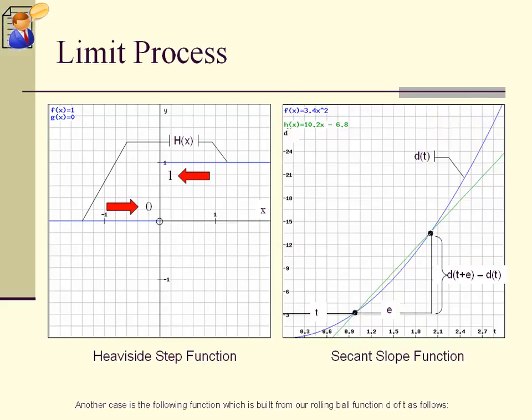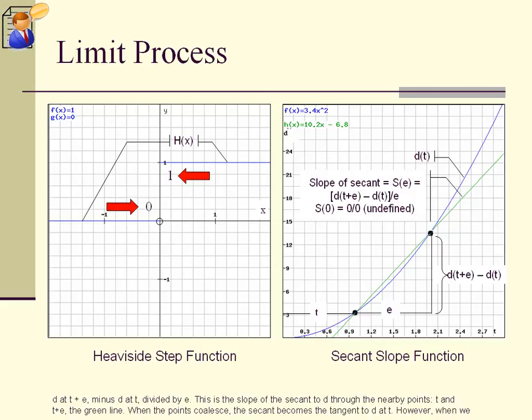Another case is the following function which is built from our rolling ball function d of t as follows: d at t plus e, minus d at t, divided by e. This is the slope of the secant to d through the nearby points, t and t plus e, the green line. When the points coalesce, the secant becomes the tangent to d at t.